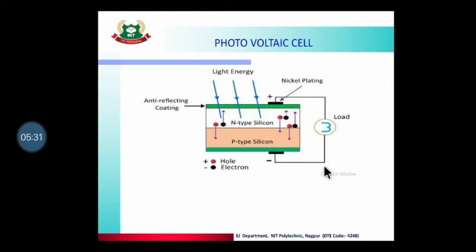If we connect a load — such as a TV, fan, electric power, bulb, tube lights, fridge, or washing machine — we call it a load. When the photovoltaic cell is connected to such loads, it starts to run them.